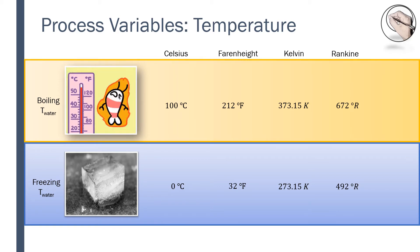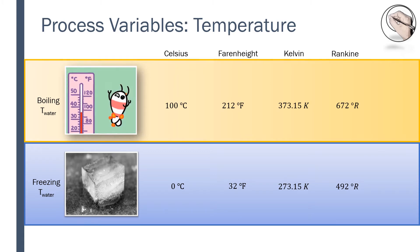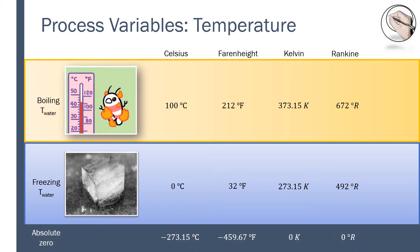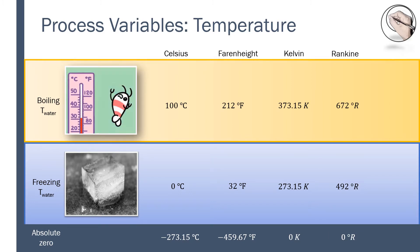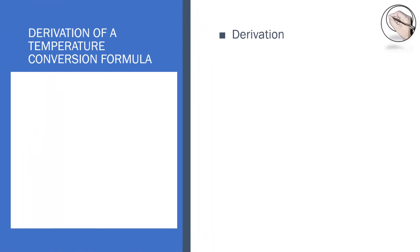The two common scales defined using freezing and boiling points of water at one atmosphere are the Celsius or centigrade scale and the Fahrenheit scale. The Kelvin and Rankine scales are defined such that the assigned absolute zero value is zero, and the size of the degrees is the same as a Celsius degree for the Kelvin scale or a Fahrenheit degree for the Rankine scale. A temperature expressed in one defined scale can be converted to its equivalent in another scale using a temperature conversion formula.